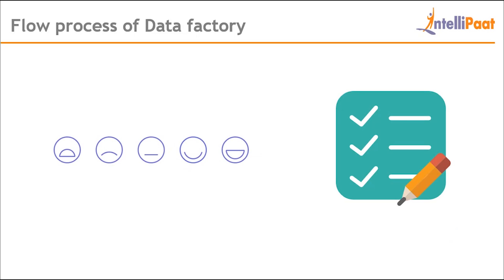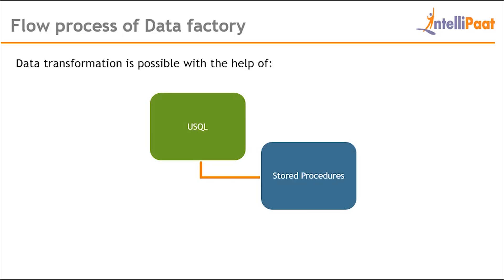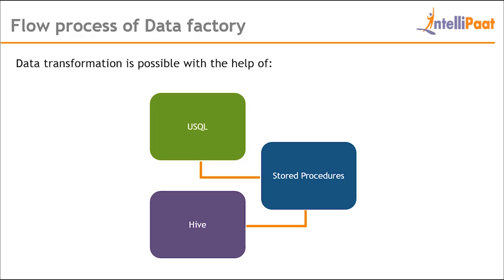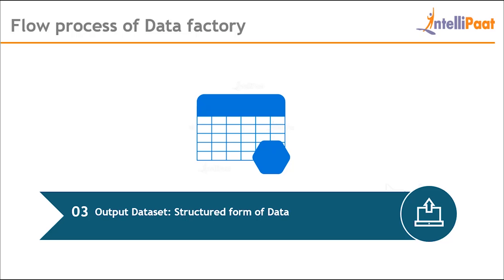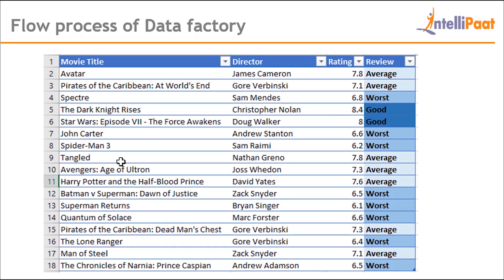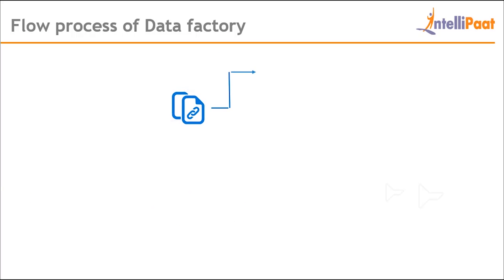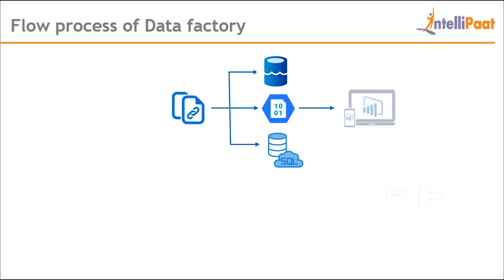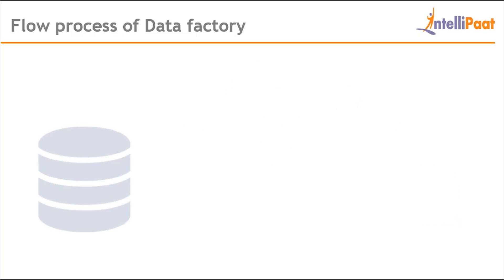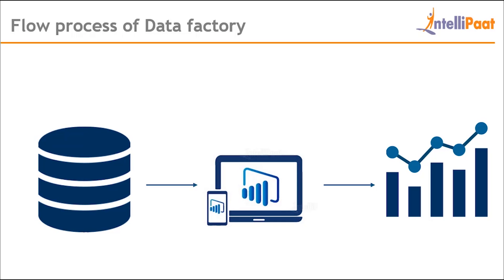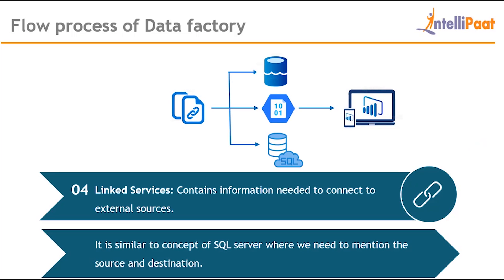Now let's look at the working process. Input data is the data within our data store. For example, we are collecting a dataset from the IMDb website to perform visualization based on movie rating. This raw data is processed through a pipeline, which performs operations like data movement or data transformation. I want the list of movies reviewed based on rating — worst, average, or good. This transformation is performed in the pipeline using U-SQL, stored procedures, or Hive.